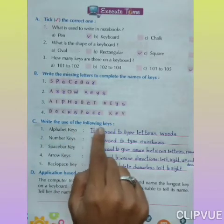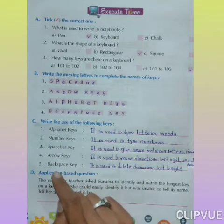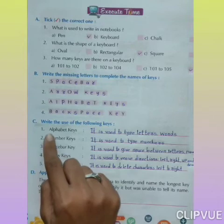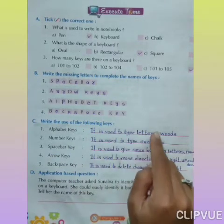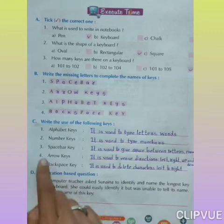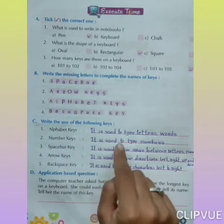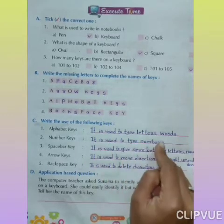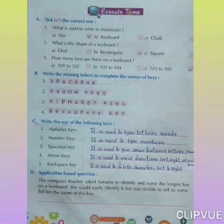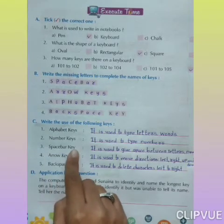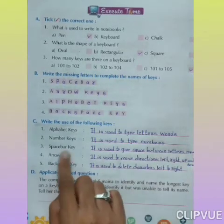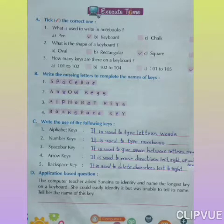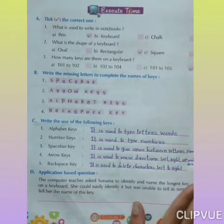Section C: Write the use of the following keys. Number 1 — Alphabet Keys: It is used to type letters and words. Number 2 — Number Keys: It is used to type numbers. (Number keys ka use kya hota hai? Number type karne ke liye.) Number 3 — Space Bar Key: It is used to give space between letters and numbers.